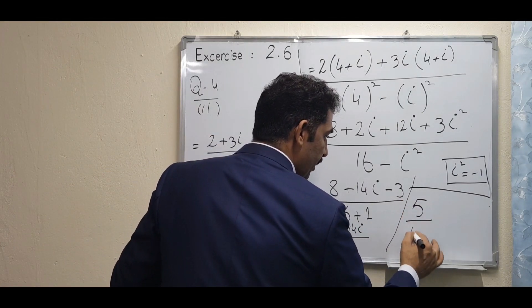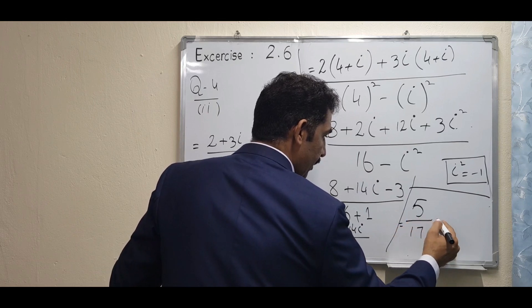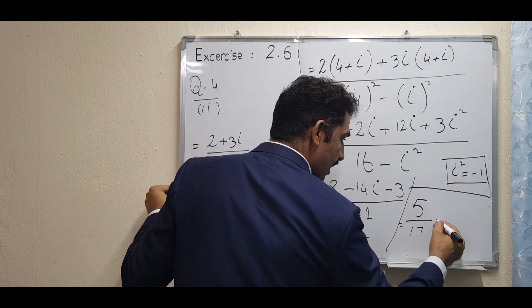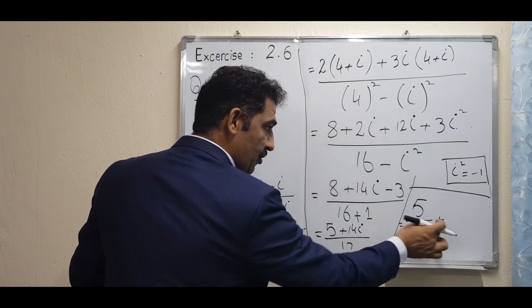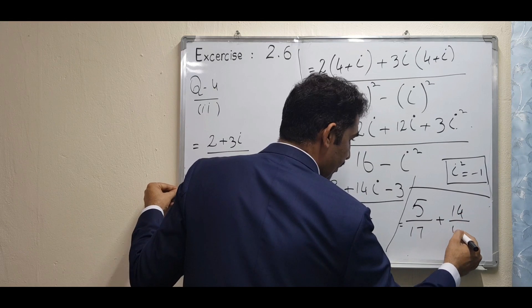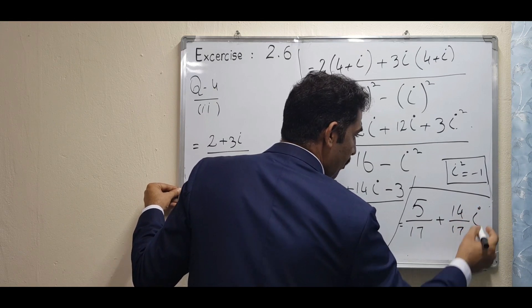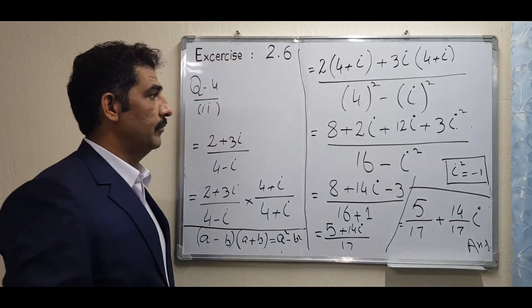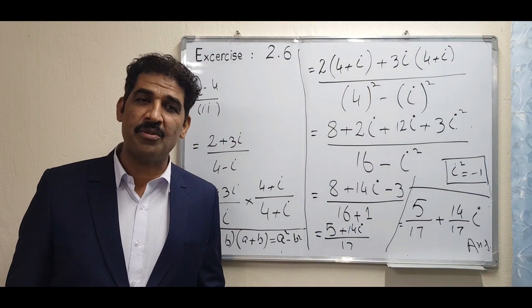5 over 17. Then see this sign. Which sign is this one? Plus. Then use plus. If negative, then use negative. 14 over 17 iota. That is our final answer. Now, any question in your mind, you can ask.